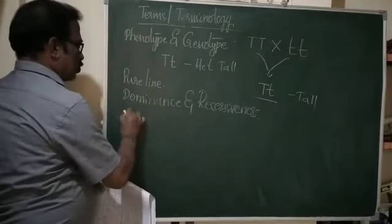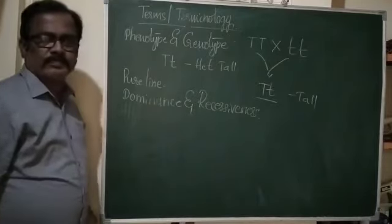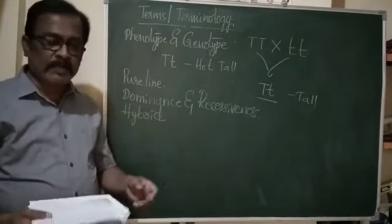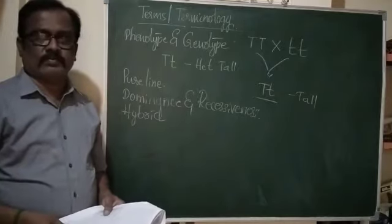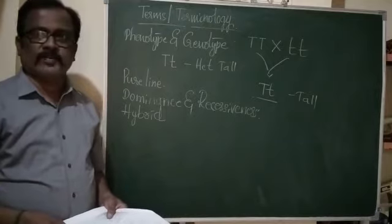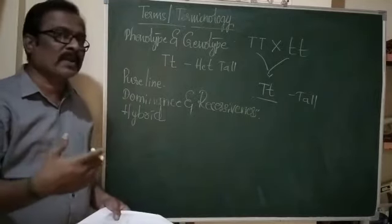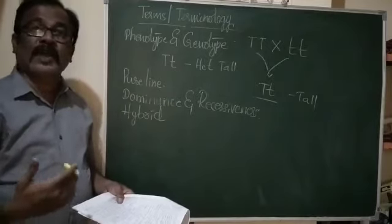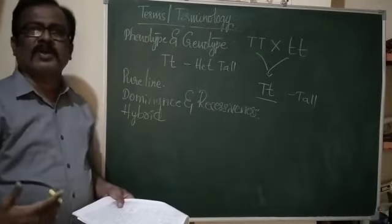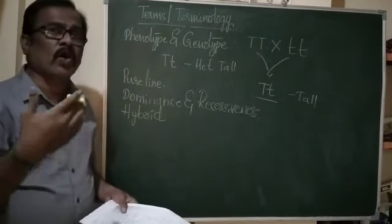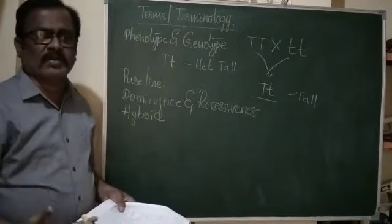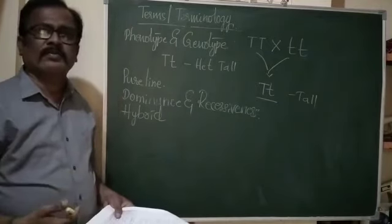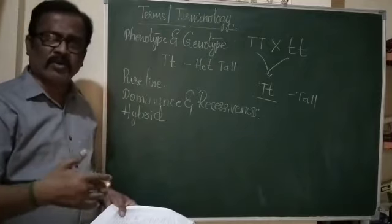The next term is hybrid. I am a hybrid to my parents; you are a hybrid to your parents. Hybrid means the offspring of two parents that differs in one or more characters. Monohybrid differs in one character, dihybrid in two, trihybrid in three, tetrahybrid in four, and polyhybrid in many characters.